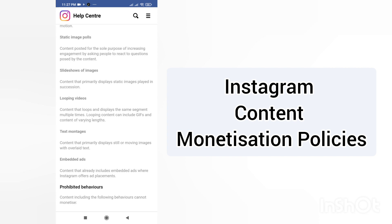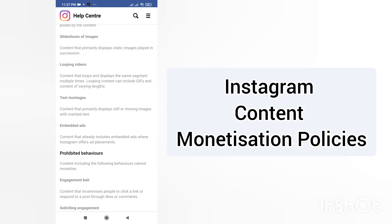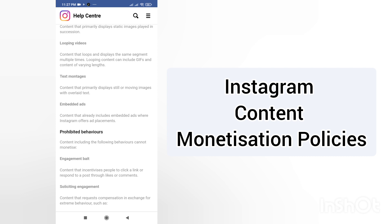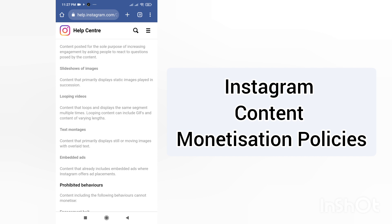Text montages — content that primarily displays still or moving images with overlaid text — are also prohibited. Finally, content that already includes embedded ads where Instagram also offers placement will not be monetized. The bottom line is they require high-quality, well-developed content and will not allow anything below standard. If you want to monetize your content, you need to go through all these policies.